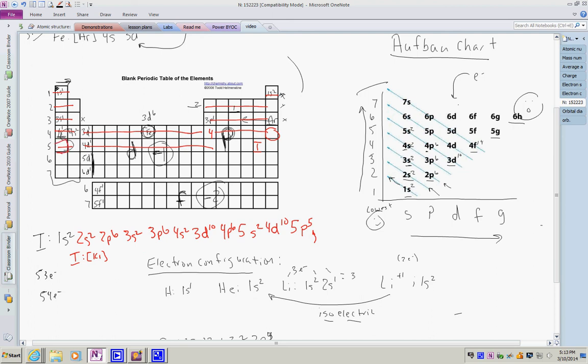Shorthand method would be, the previous noble gas is right here and that is krypton. So I would go brackets krypton, and then simply start right here, which is going to be 5s2, 4d10, 5p5. And there you go, shorthand versus longhand. A little bit of practice, ask some questions, let me know.